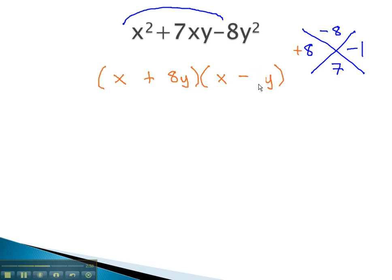As usual, we don't truly need the 1 in front of the y, and we can leave that factor as simply x minus y at the end, with x plus 8y as our other factor. Again, this shortcut is nice, but it only works if we have a 1 in front of the x squared.